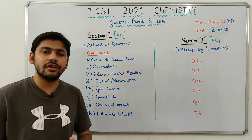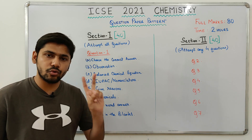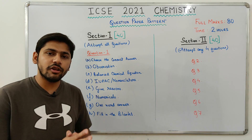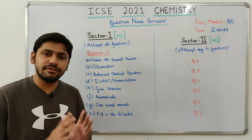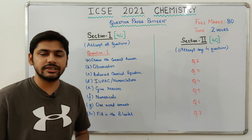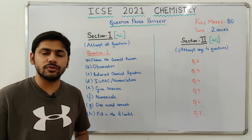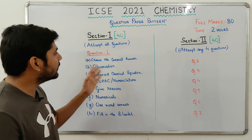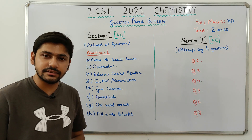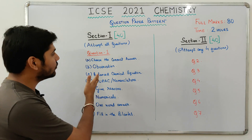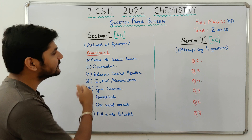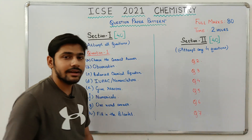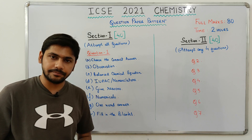The ICSC 2021 chemistry question paper will be of 80 marks and you will get 2 hours to solve it. You will also get an additional 15 minutes to read the question paper before you start writing. The question paper is divided into two sections: Section 1 worth 40 marks and Section 2 worth 40 marks.